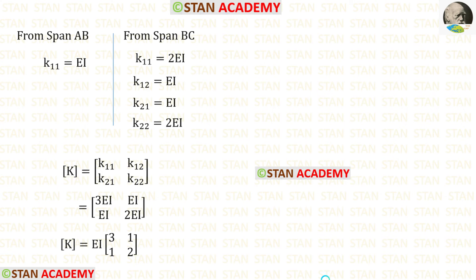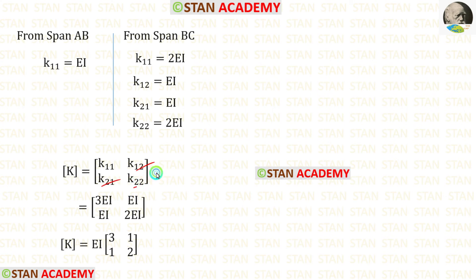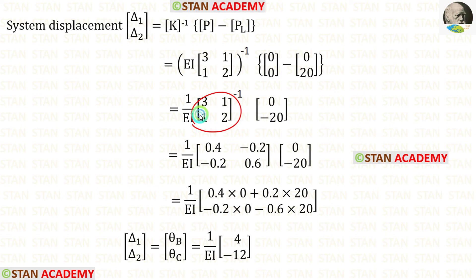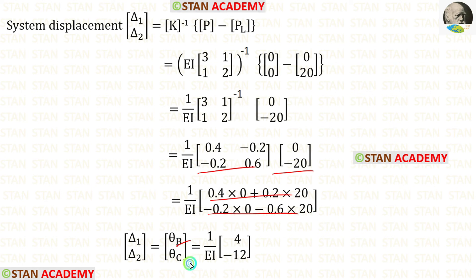Now let us assemble the global stiffness matrix. K11 appears twice (from both spans AB and BC), so we add them to get 3EI. Applying K12 = EI, K21 = EI, K22 = 2EI and keeping EI outside, we apply all values in the formula. EI inverse is 1/EI. We add the P and PL matrices, then find the inverse using a calculator. After multiplying the inverse stiffness matrix with the load matrix, we obtain the values of theta B and theta C.